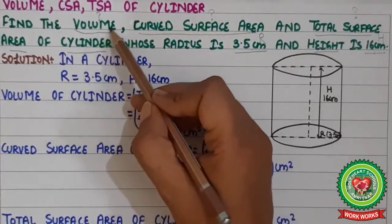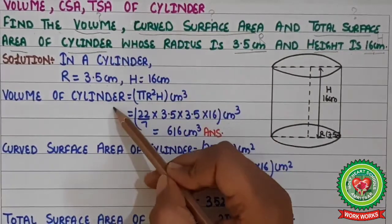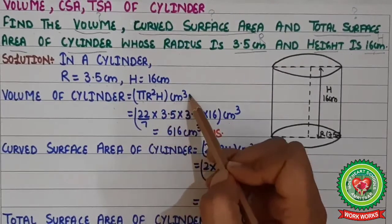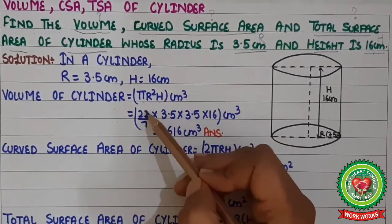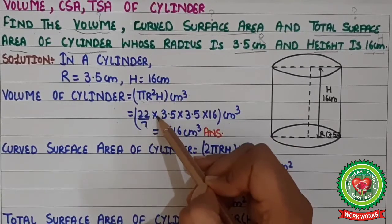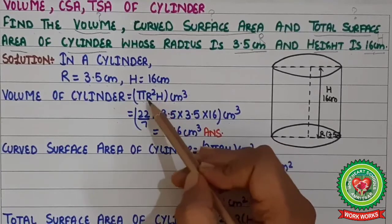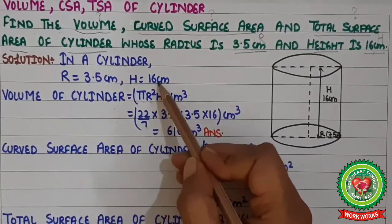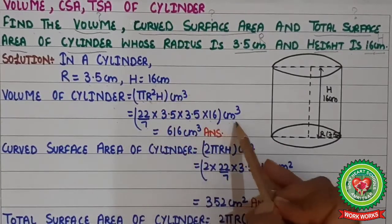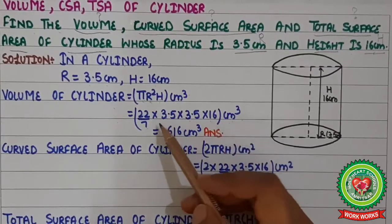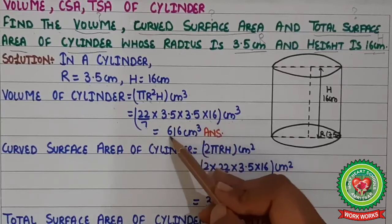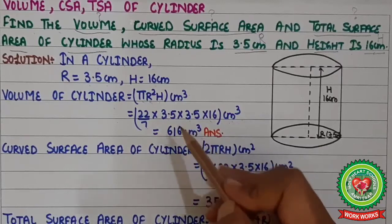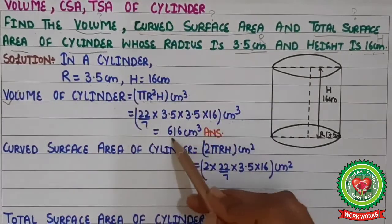Starting with the solution: in a cylinder, radius = 3.5 cm and height = 16 cm. First, we find the volume of the cylinder using the formula πr²h. Substituting: (22/7) × 3.5 × 3.5 × 16. After doing the calculations, we get 616 cm³ as the volume of the cylinder.